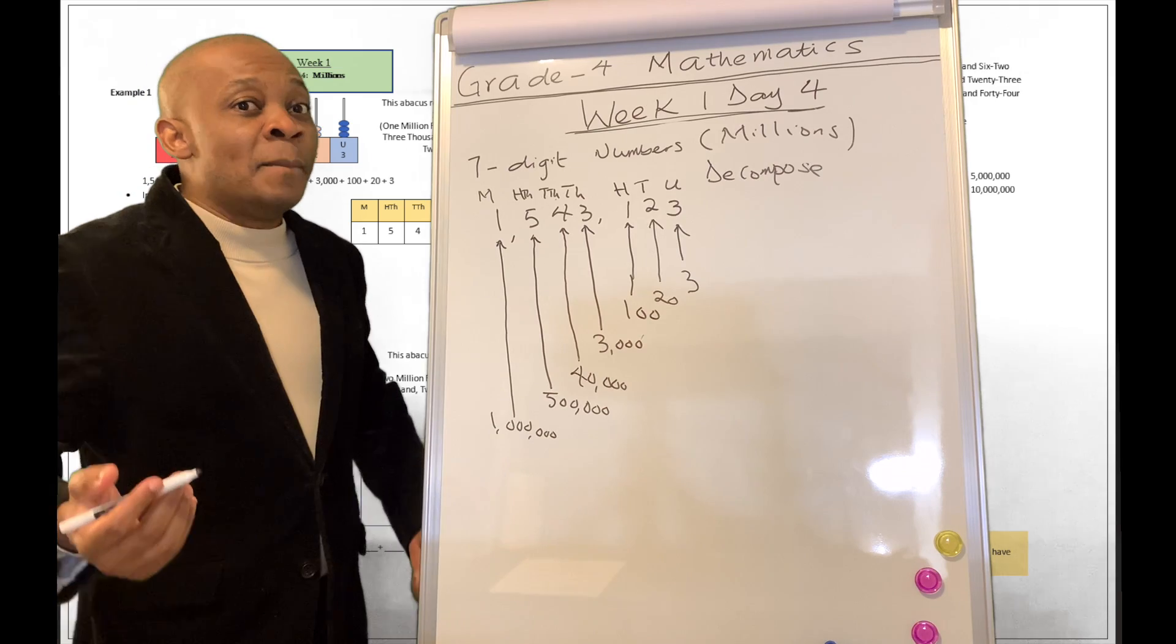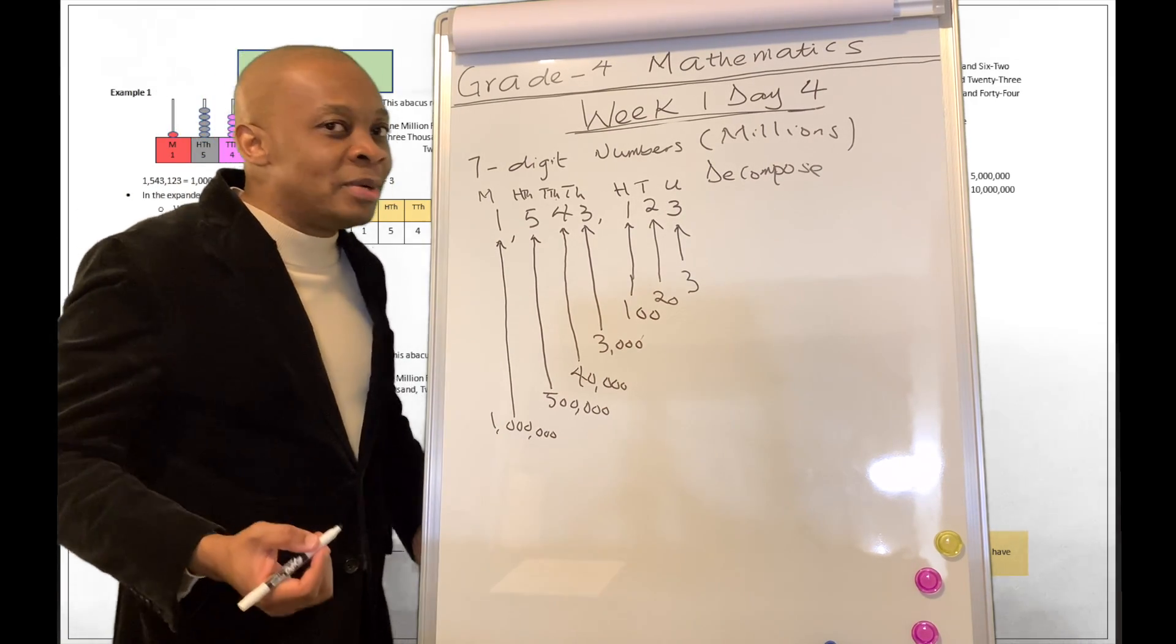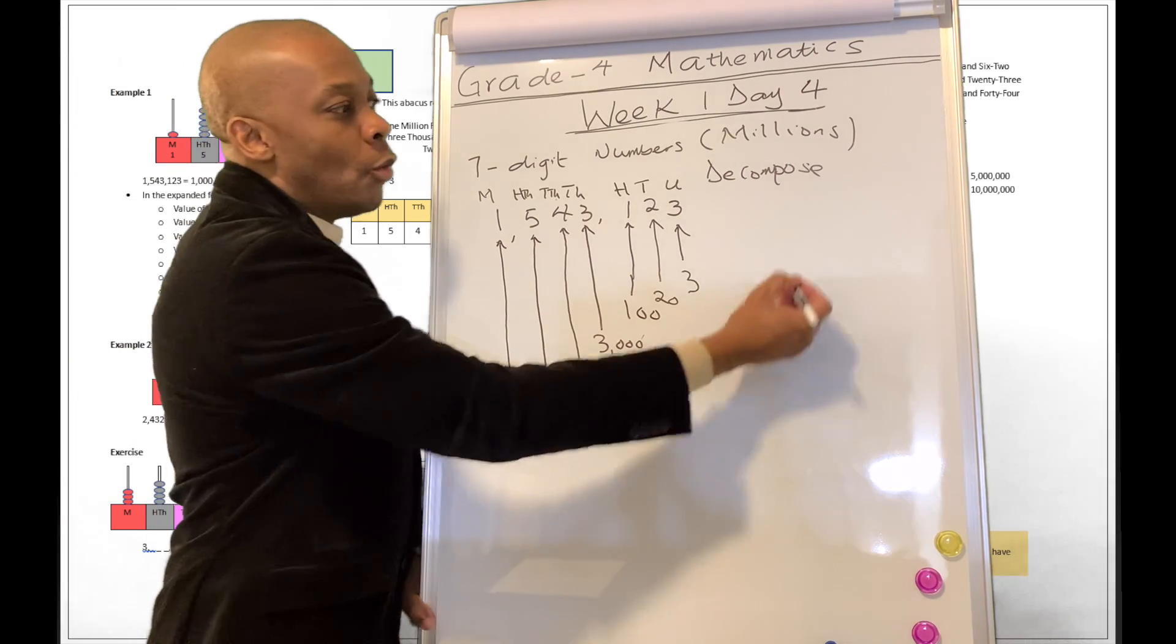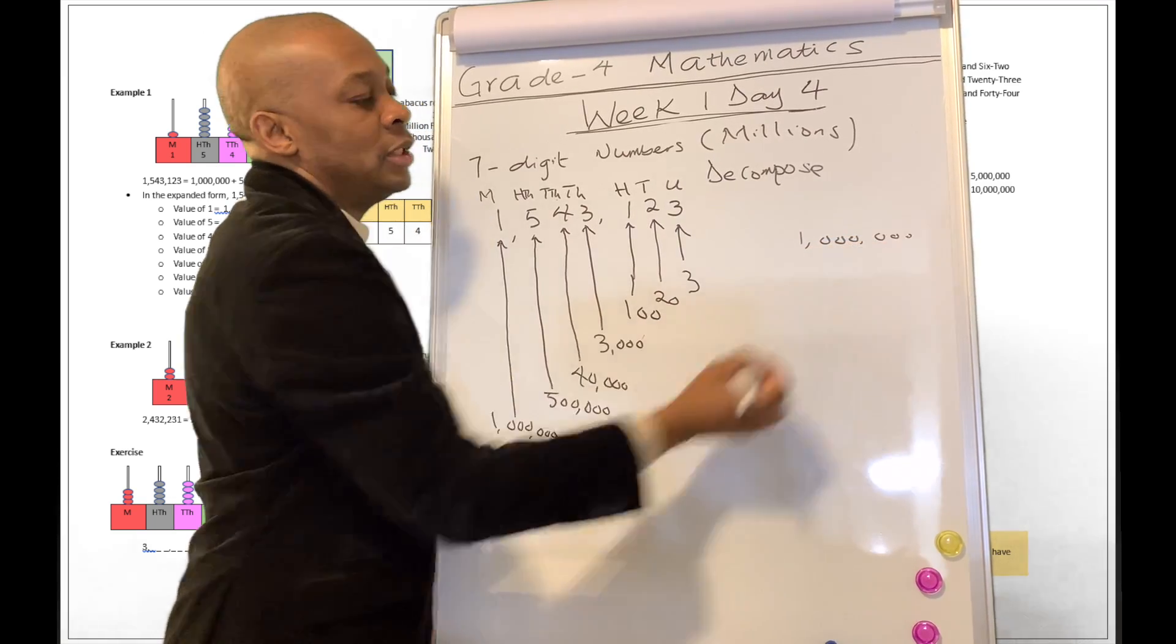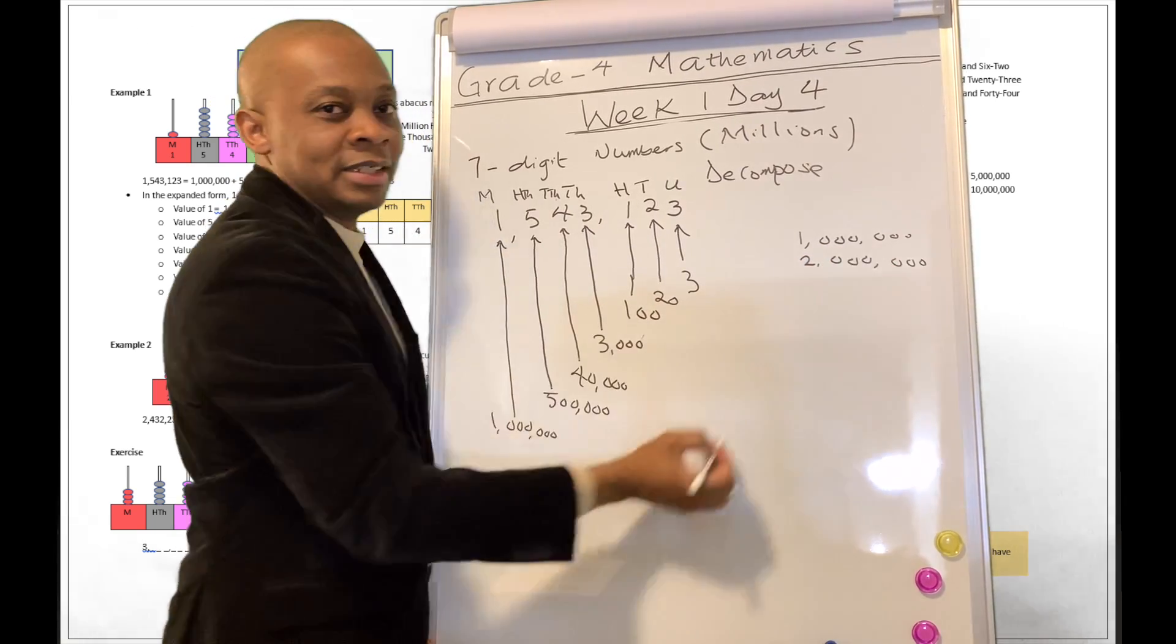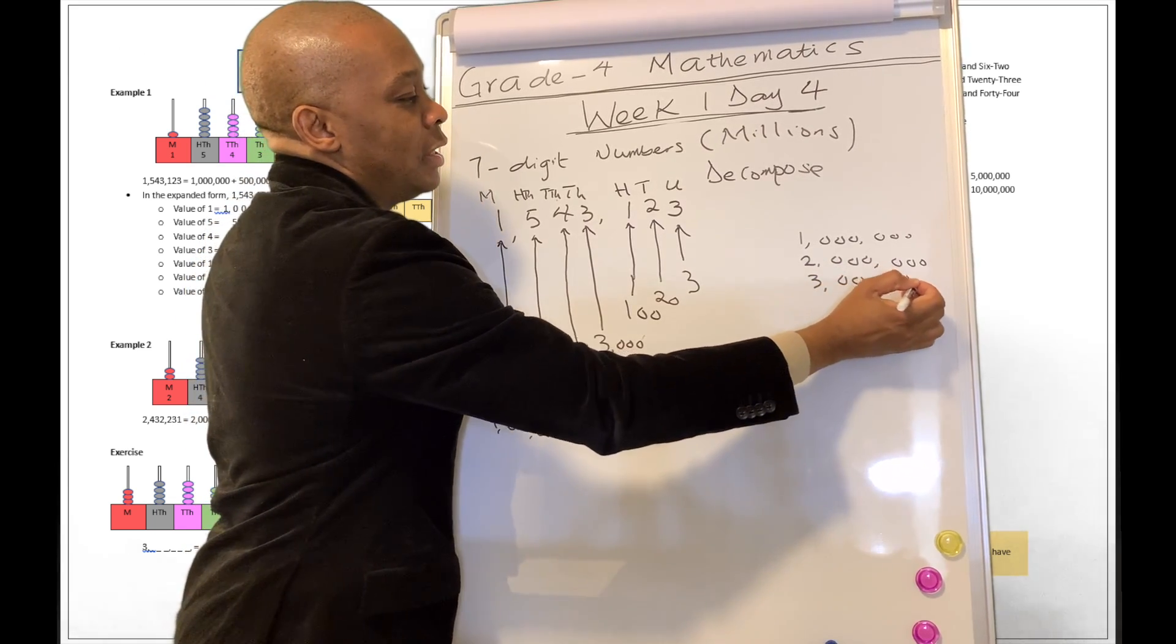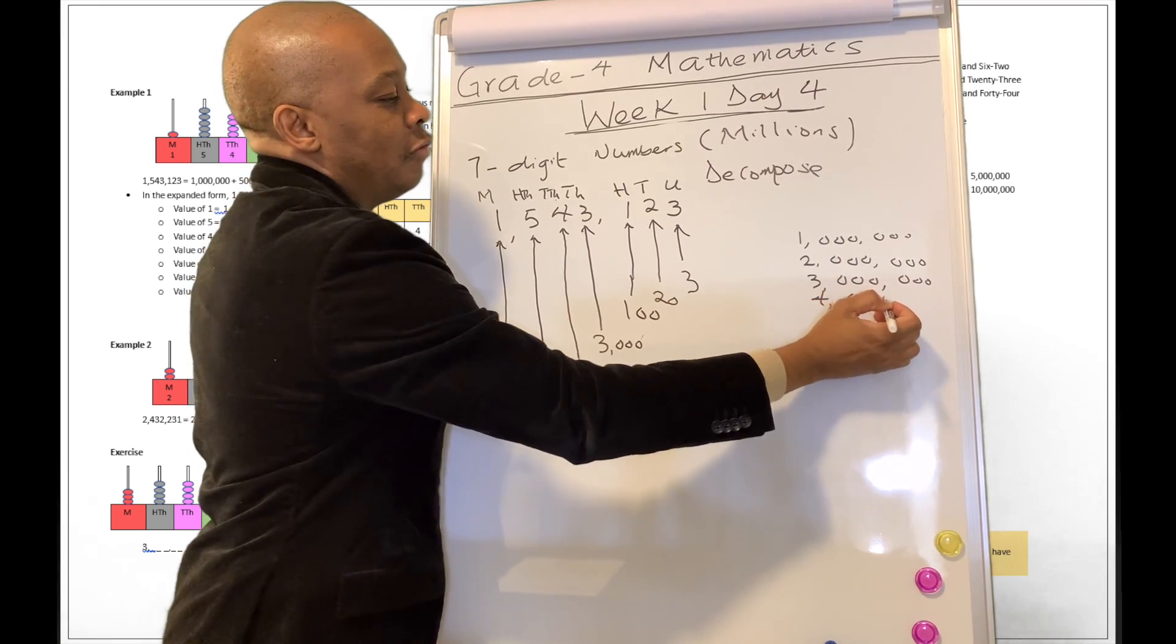We haven't counted by the millions before. What does it mean to count by the millions? Well, it's pretty much simple. Just like you're going to be counted by your thousands. Well, 1 million. That's 6 zeros in front of 1. Then 2 million. 3 million. 4 million.